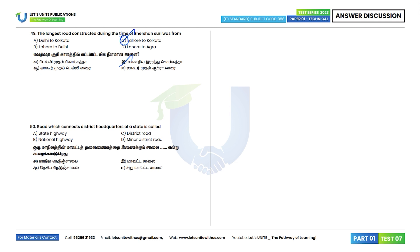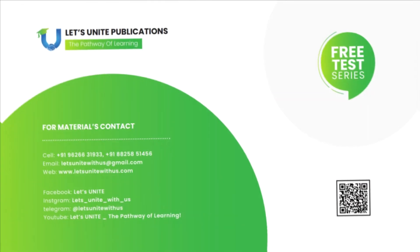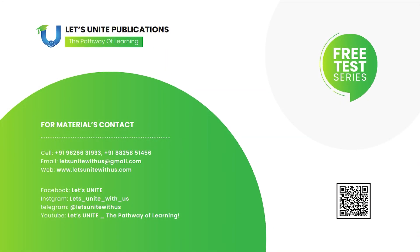50th question: The road which connects district headquarters of a state is called a state highway. That is the correct answer. We have seen the explanation for the first set of questions in this video; we will continue the explanation in the next video. Thank you.